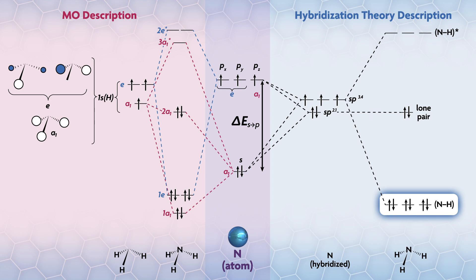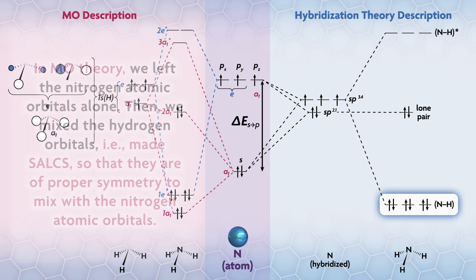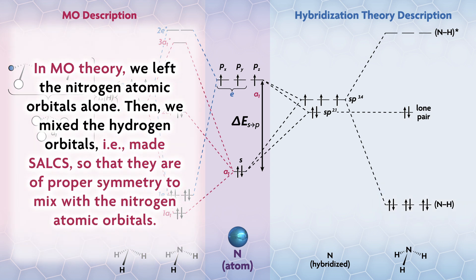Second, the N-H bonds on the hybridization side are really seen as equivalent, consistent with our intuition. The N-H bonds on the MO side are also equivalent, but it is less apparent because there are two different MOs of A1 and E symmetry that are delocalized, leading to the bonds.